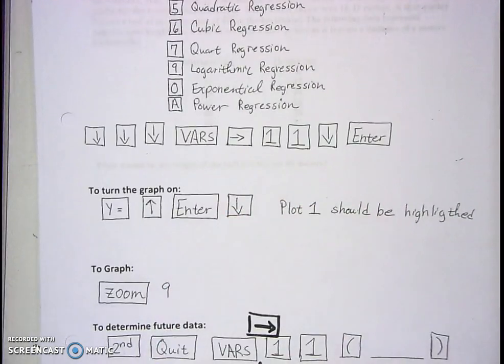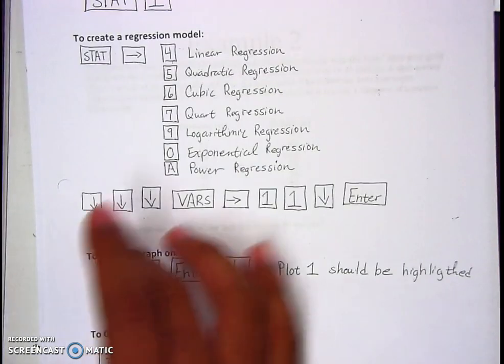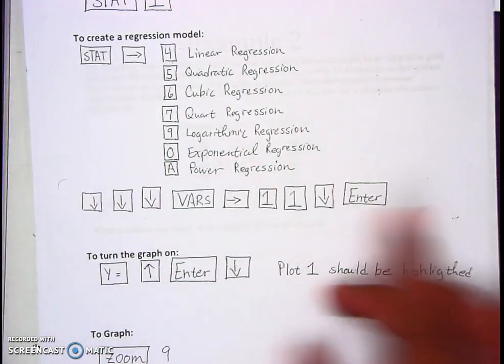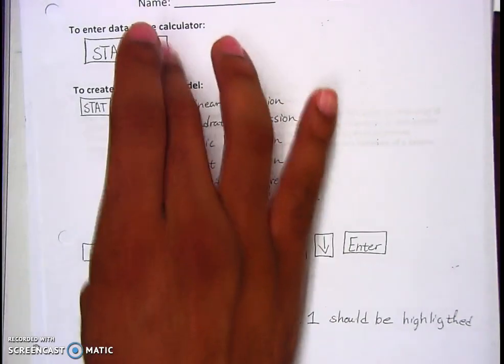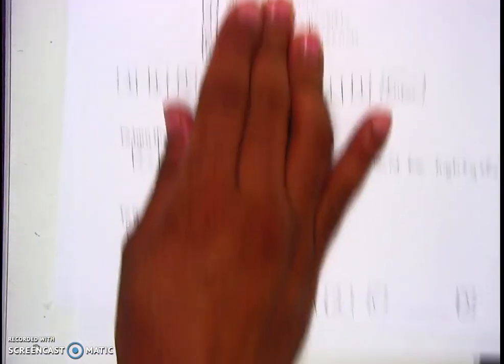Then we jump straight down to the part to determine future data. Right now we don't need the graphing part. So we're going to do the stat, the regression, and then jump straight to the bottom of the paper.